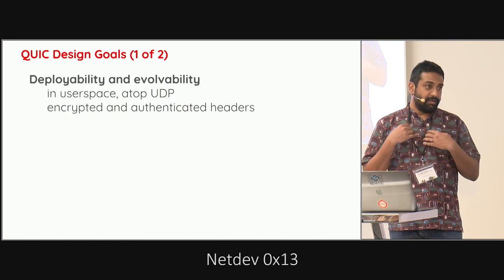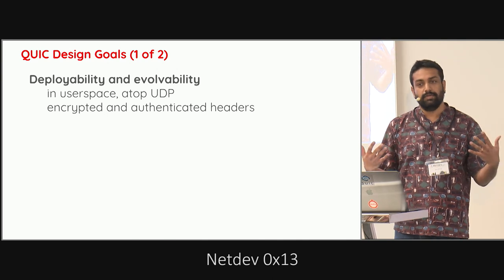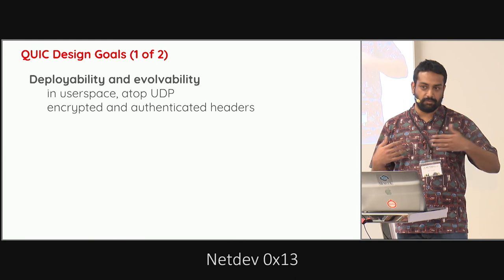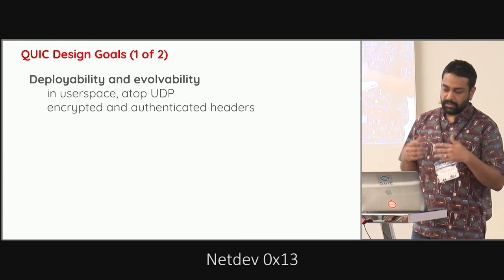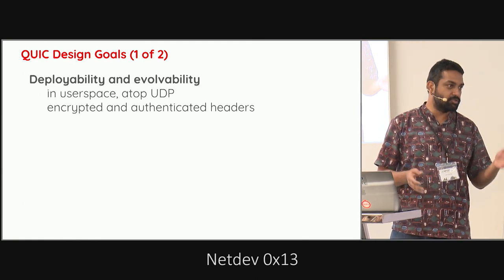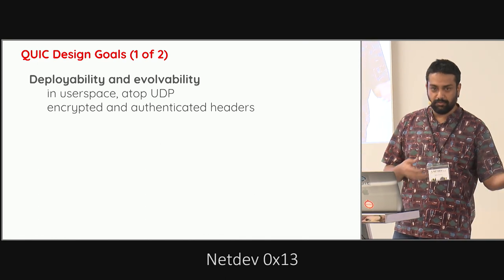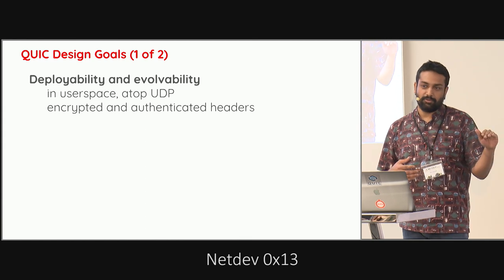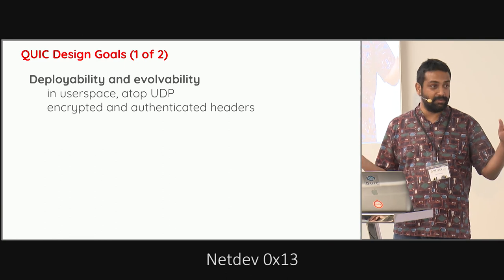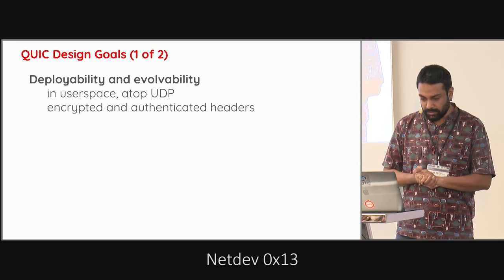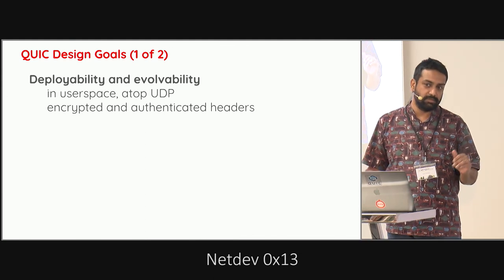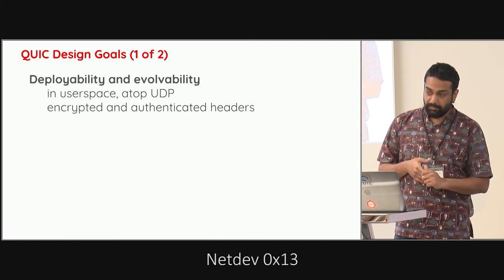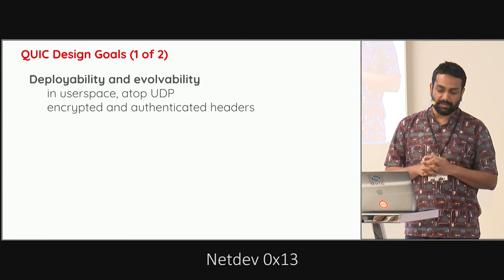We wanted QUIC to be deployable today. We didn't want to wait for NATs or middleboxes to come on board. We put it in user space on top of UDP so we could deploy it right away. If it were a new transport like SCTP, we could wait another 20 years and it would still not be deployed. So we deployed on top of UDP — a very deliberate design choice. Being in user space also allowed us to iterate much more rapidly at the endpoints, and we encrypted and authenticated the headers.